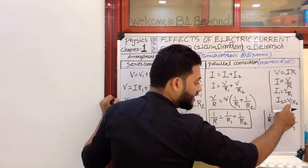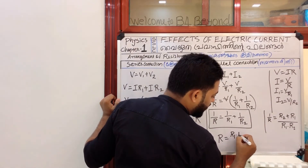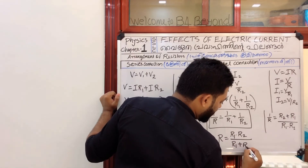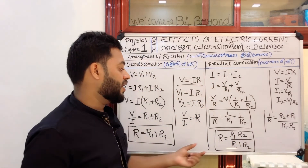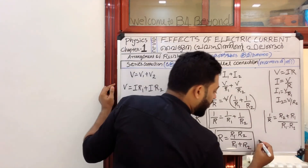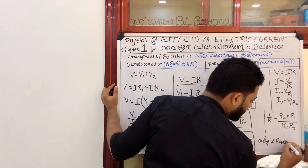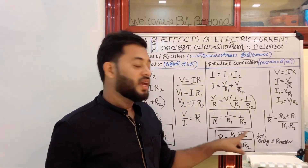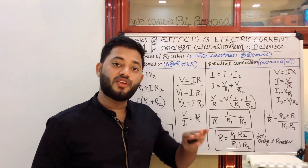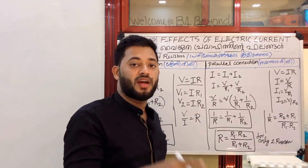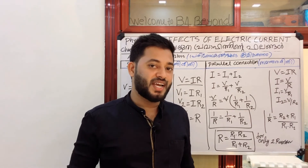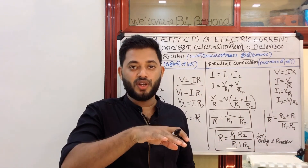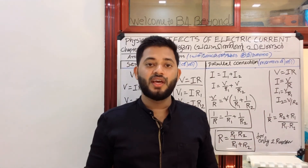R effective equals R1 into R2 divided by R1 plus R2. This is the formula for two resistors in parallel. If you want to add more resistance values in R, you can add the values accordingly.